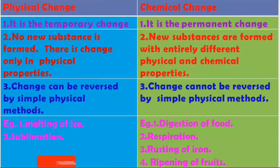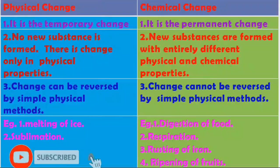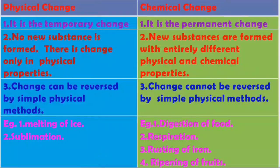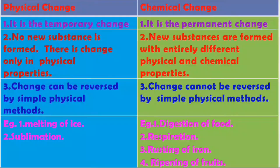Now we will see the difference between physical change and chemical change. Physical change is a temporary change, whereas chemical change is a permanent change. In a physical change, no new substance is formed — there is a change only in physical properties.